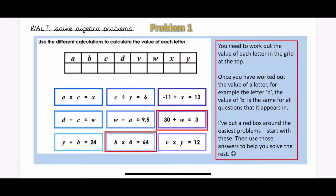Okay, so now you've worked out the values of W and B, you should be able to use that to help you figure out some of the other ones. So for example, Y plus B equals 24. So something add the value of B that you've already worked out equals 24, and then see if you can figure out the rest as well.